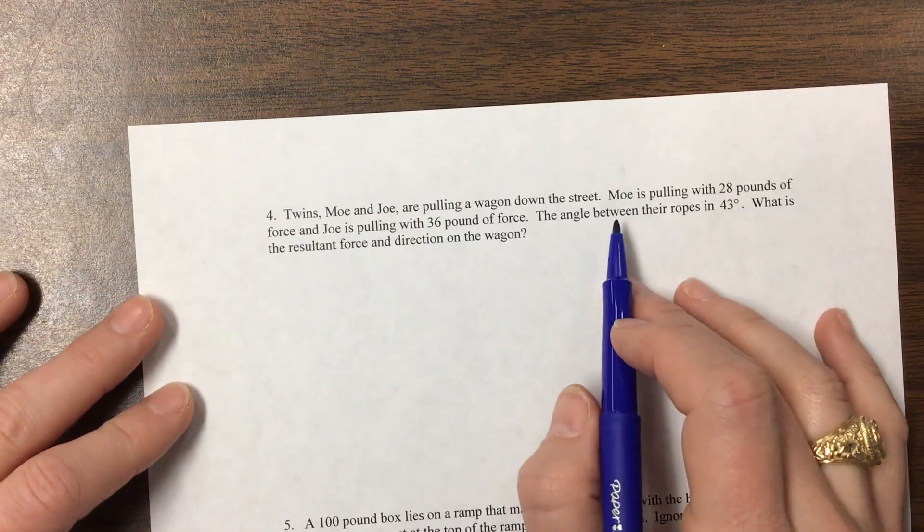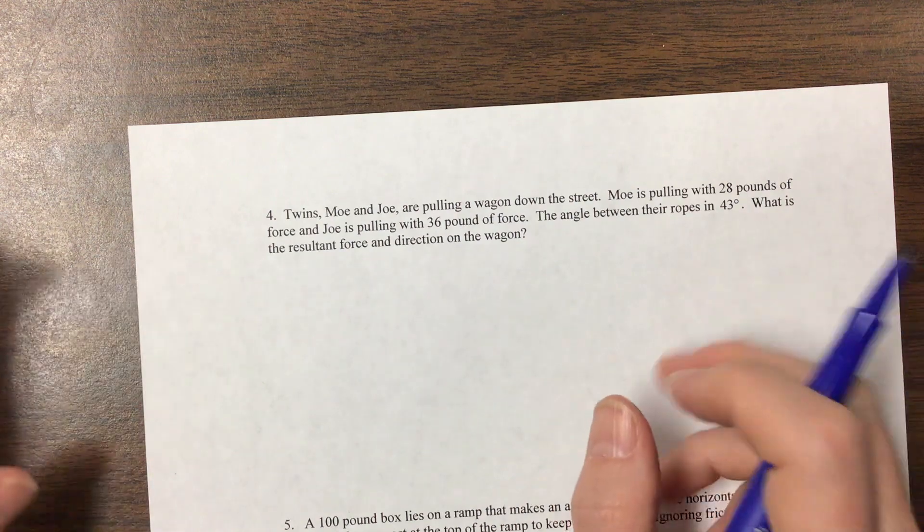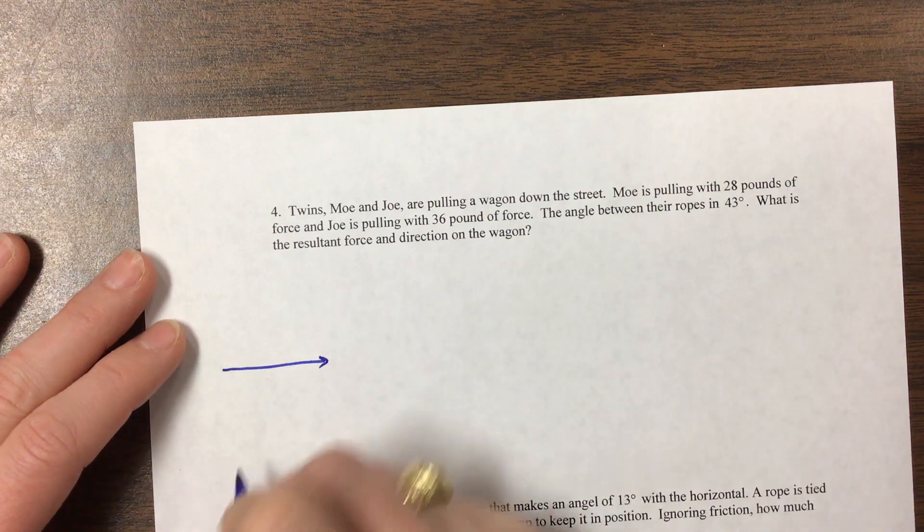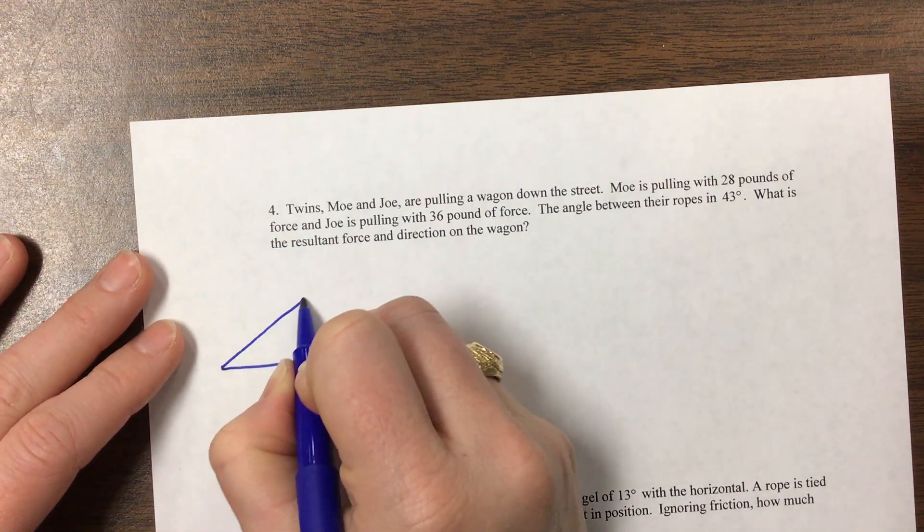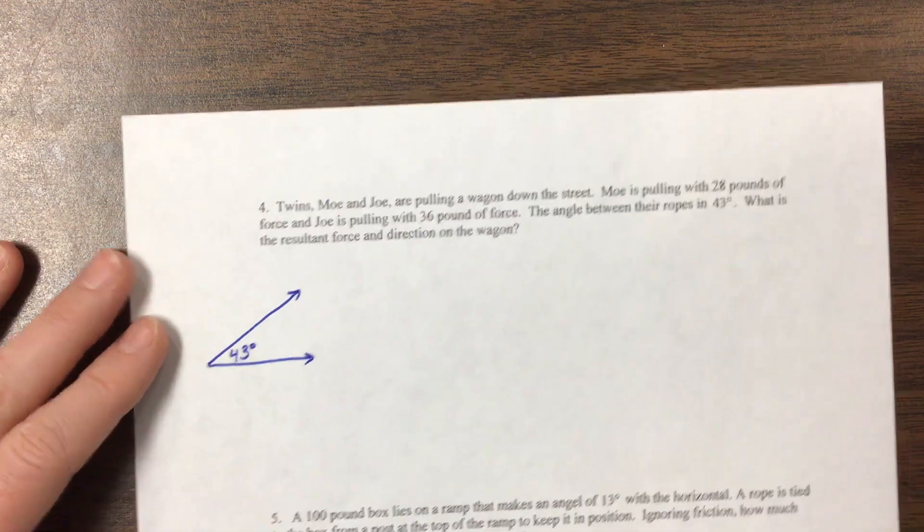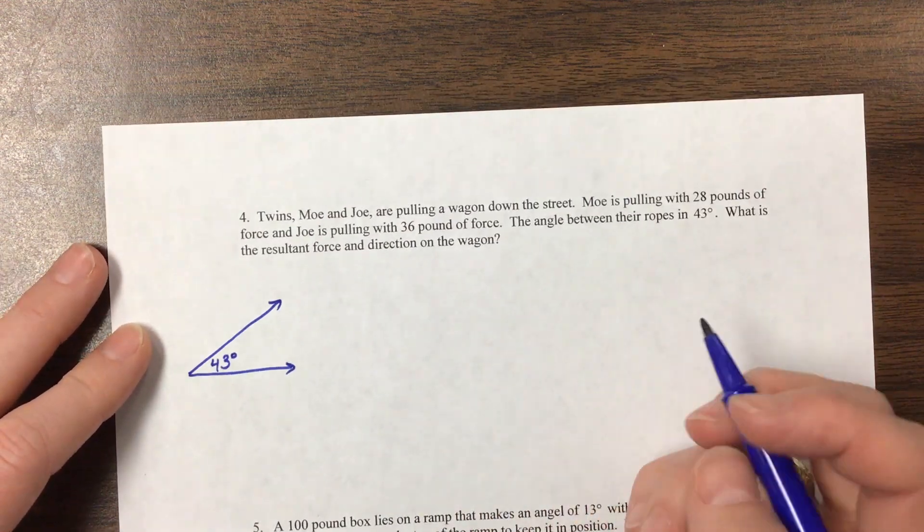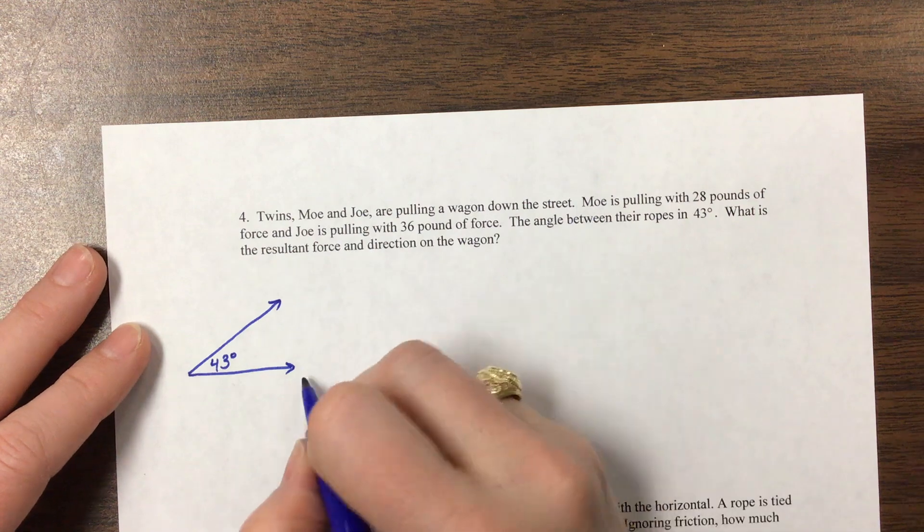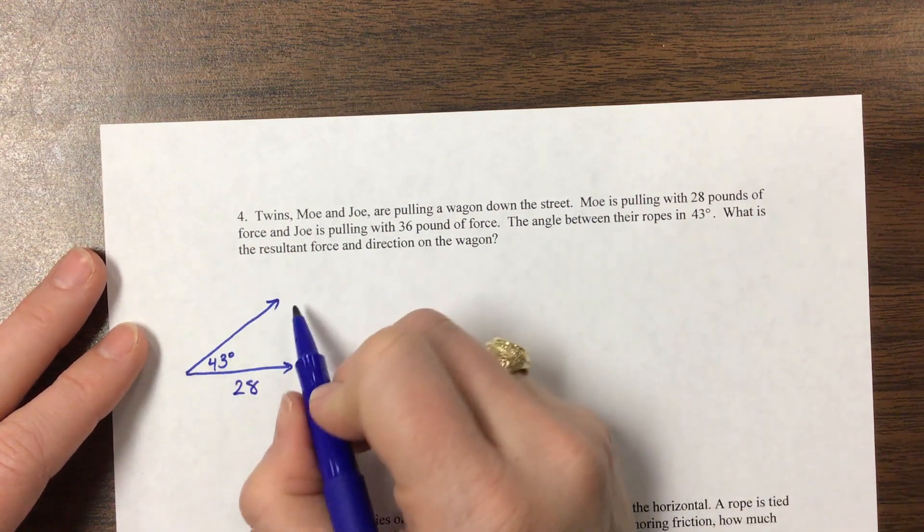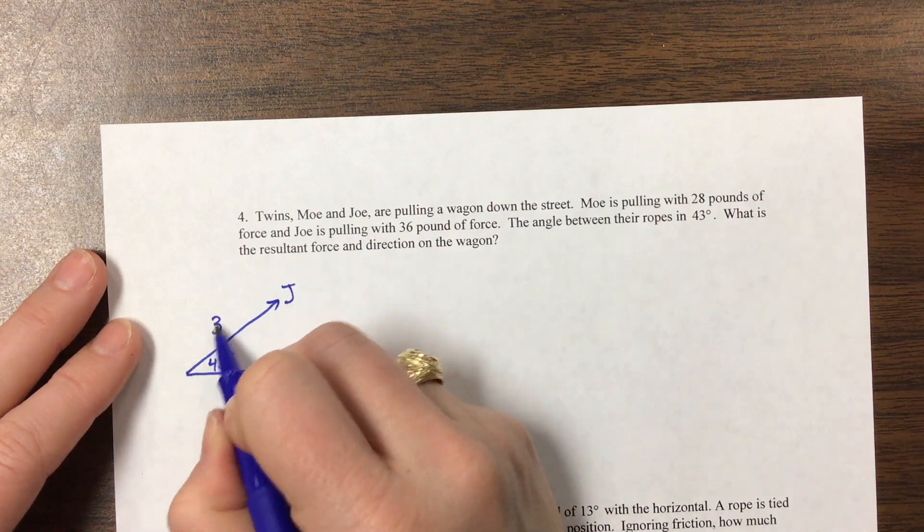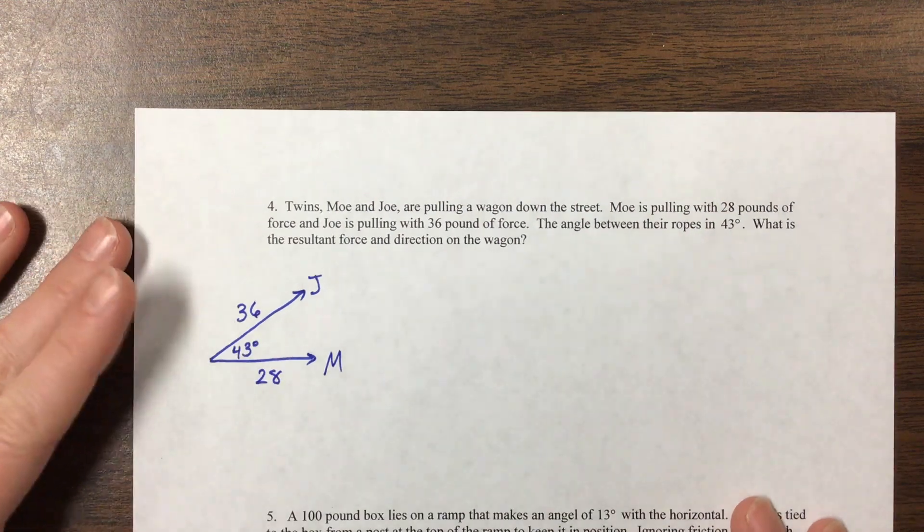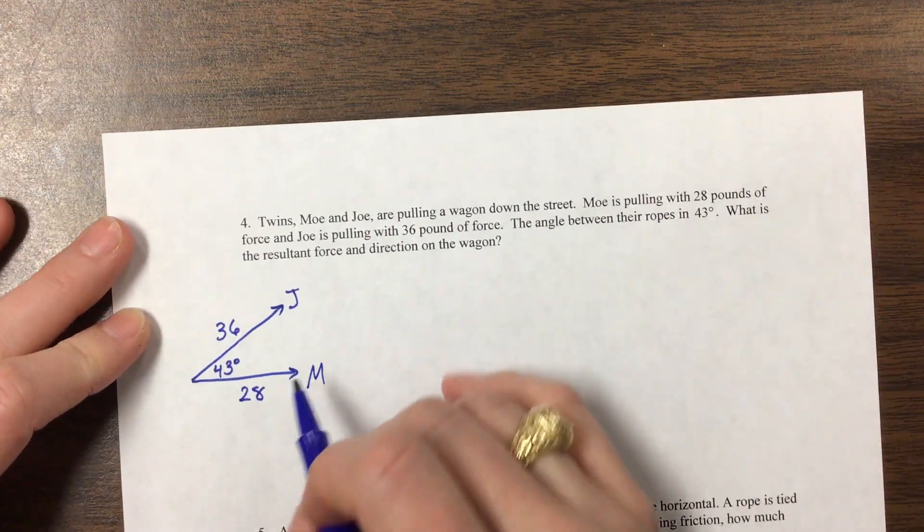On this one, we don't know exactly where they're pulling from, but we don't really care. So let's pick somebody to pull at zero degrees, and somebody else is going to pull at 43 degrees. So there's a 43-degree angle between them, and it doesn't really matter which is which. They said Moe first. So Moe in this has got a magnitude of 28, and Joe has a magnitude of 36. And I would not try to do these without drawing a picture. I think it makes a huge difference.